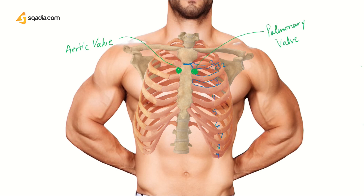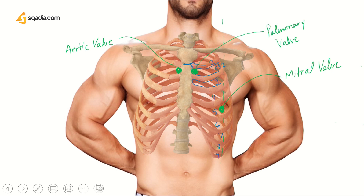The mitral valve can be heard in the fifth intercostal space at the mid-clavicular line — right over here. For the tricuspid valve, although on this bony model you can see an intercostal space between the fifth and sixth rib, many times there isn't really a big space, so they're merged. We would hear the sound of the tricuspid valve right over here.